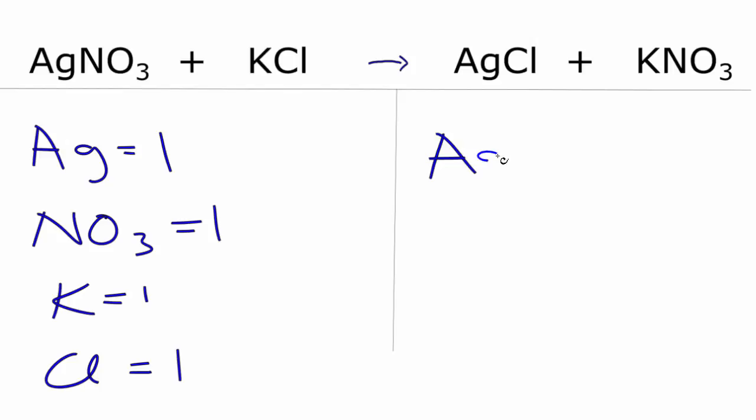I have the Ag, one of those, the NO3 right there. So NO3 equals one, K, I have one K, and Cl, I have one Cl.